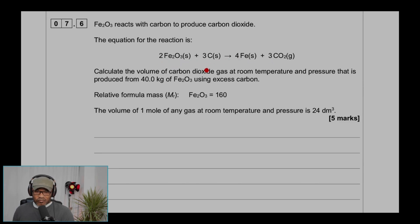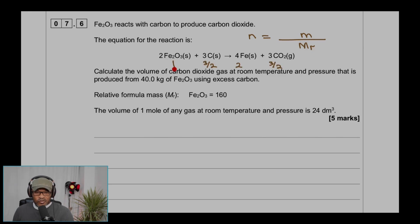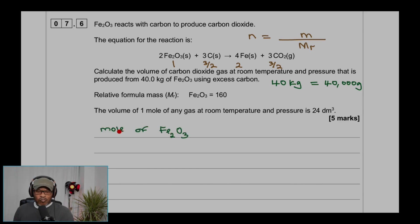The stoichiometric ratio from the equation is 2 Fe₂O₃ : 3 CO₂. Dividing by 2 gives 1 Fe₂O₃ : 3/2 CO₂. Convert 40 kg to 40,000 g. Moles of Fe₂O₃ = 40,000 ÷ 160 = 250 mol.